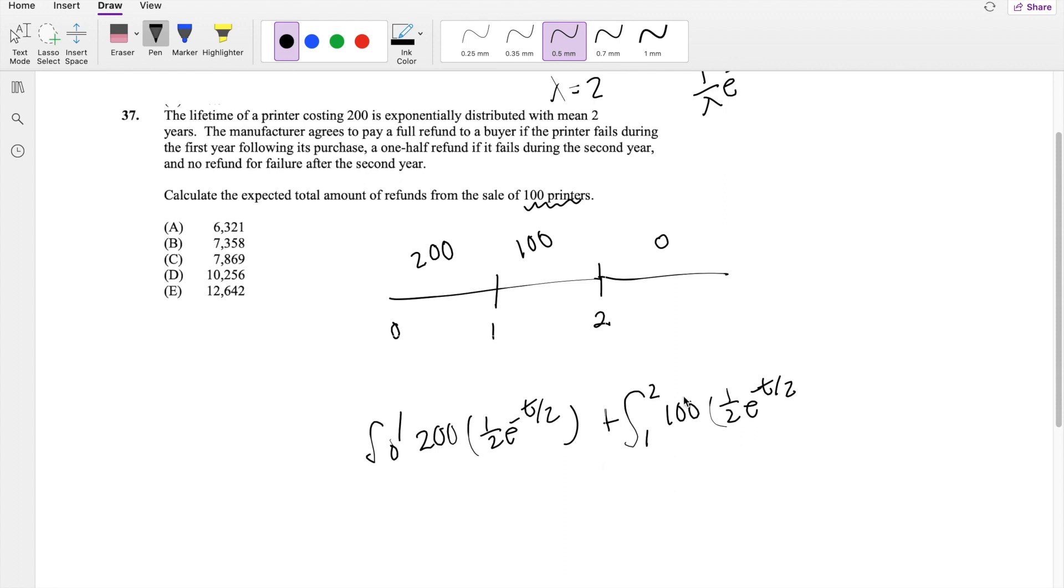But now this just becomes a regular integration problem. Not too bad here. So this becomes 200 times negative e to the negative t over 2, integrating from 0 to 1, plus 100 times negative e to the negative t over 2, integrating from 1 to 2.